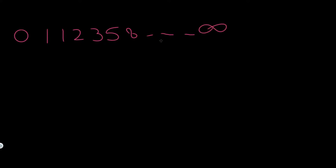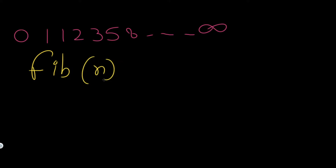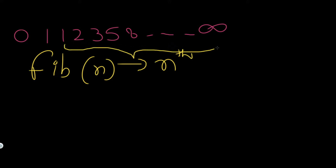In today's video we are going to make a method — let's name it fib — and this method will take an argument n. This method will take an integer argument n and return the nth number in the Fibonacci series.